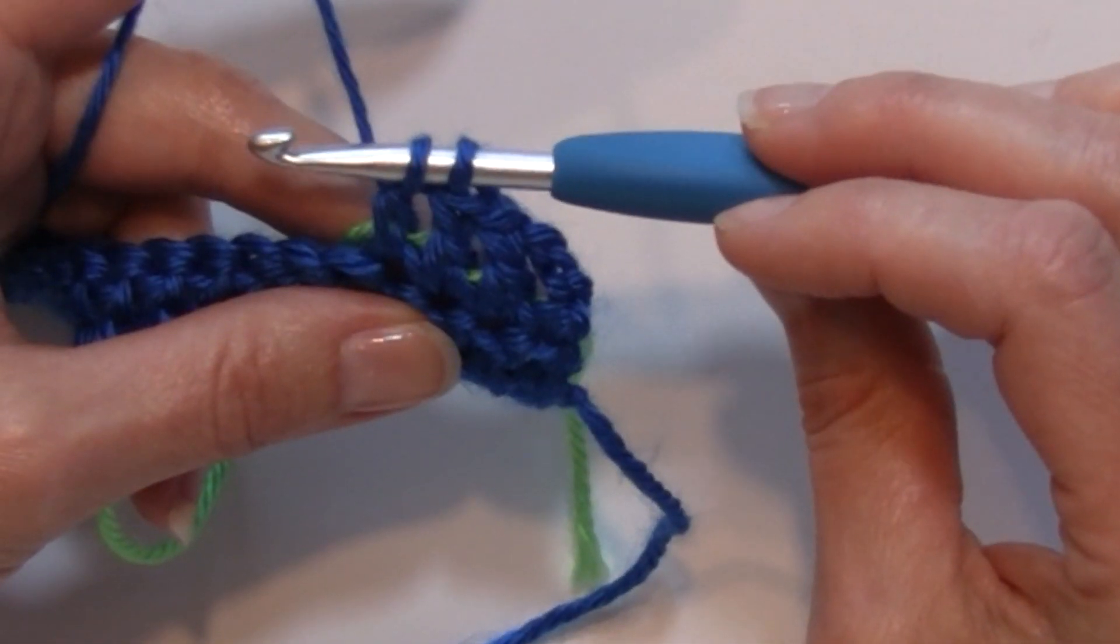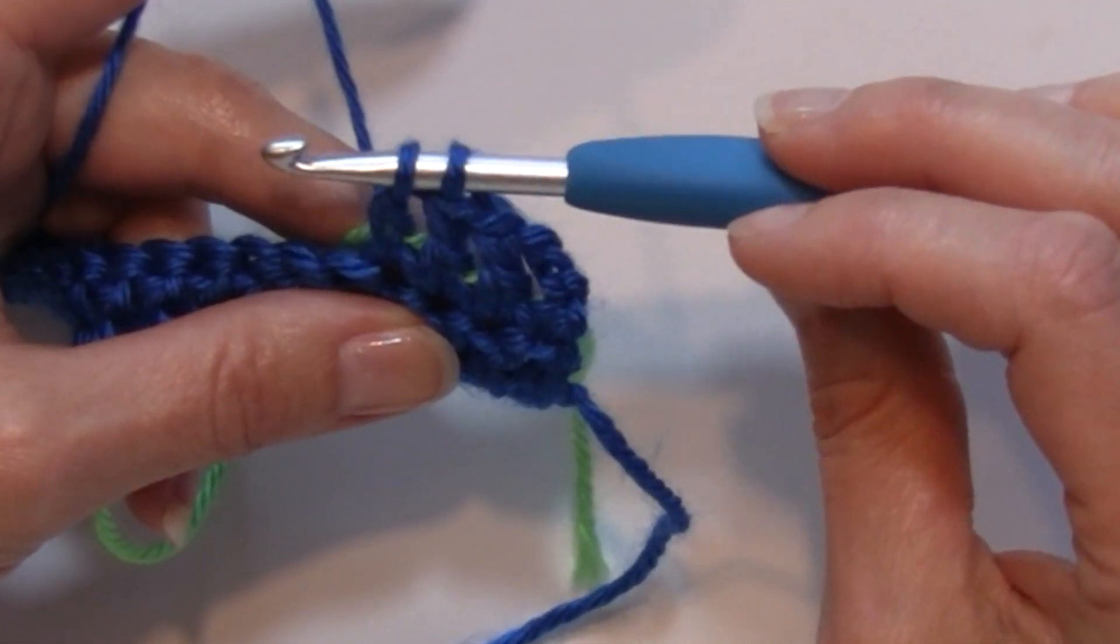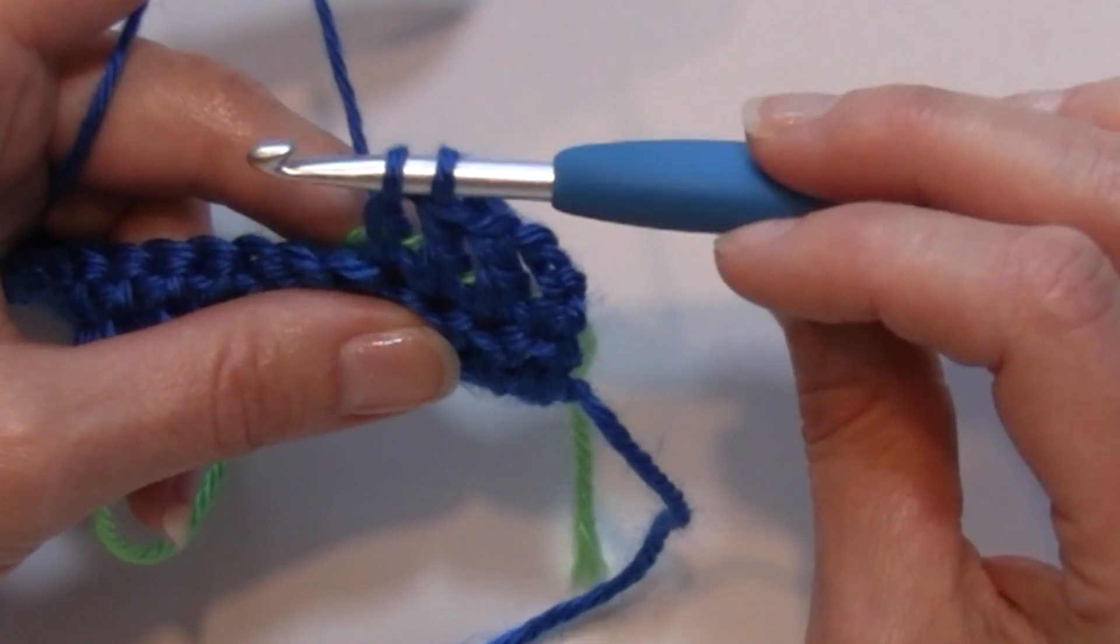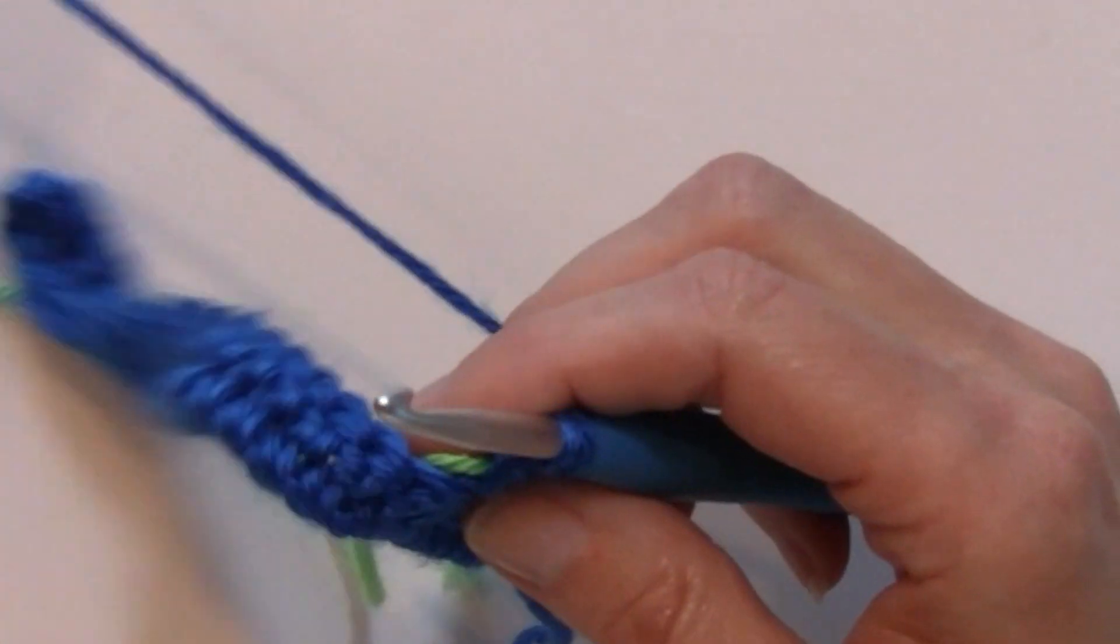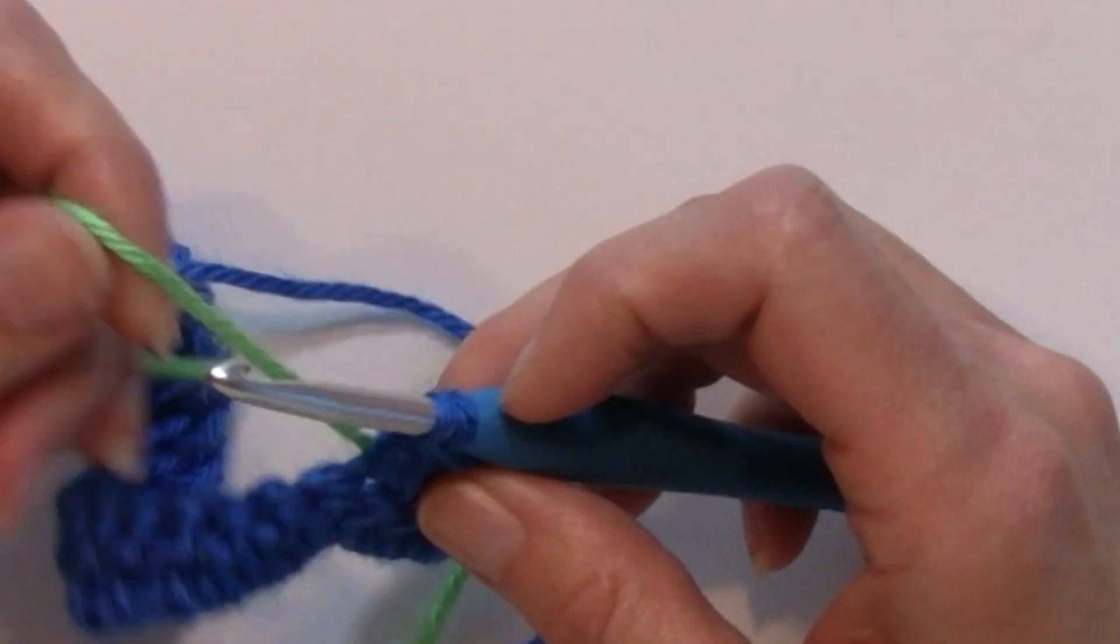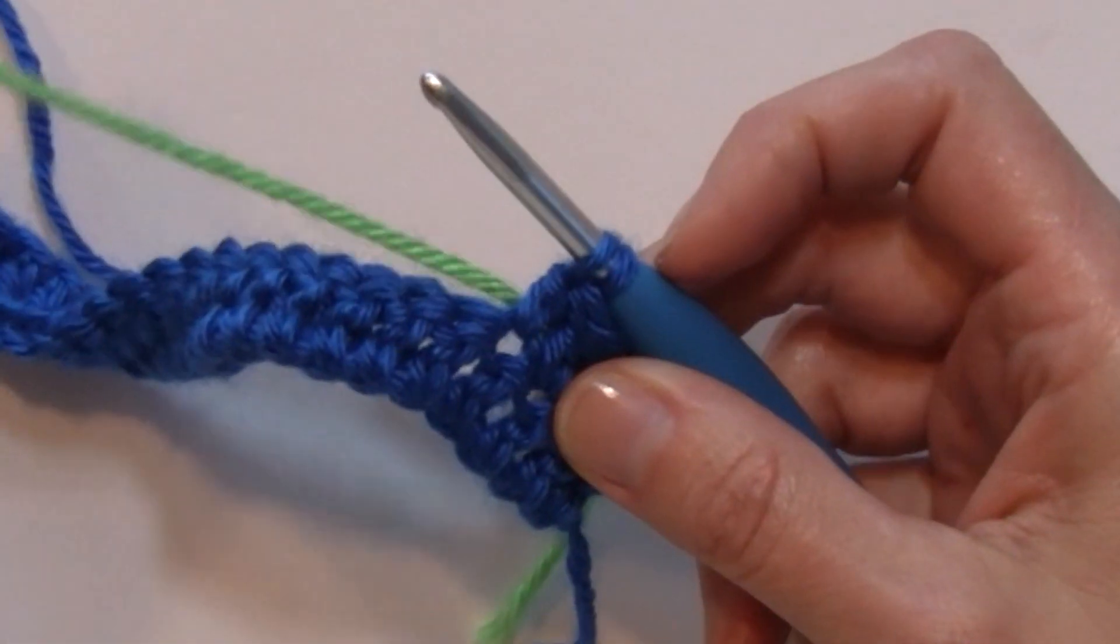I'm not going to finish that last double crochet. You can see here I still have my last two loops on my hook and I'm going to drop that color and I'm going to pull in that yarn that I've been carrying.